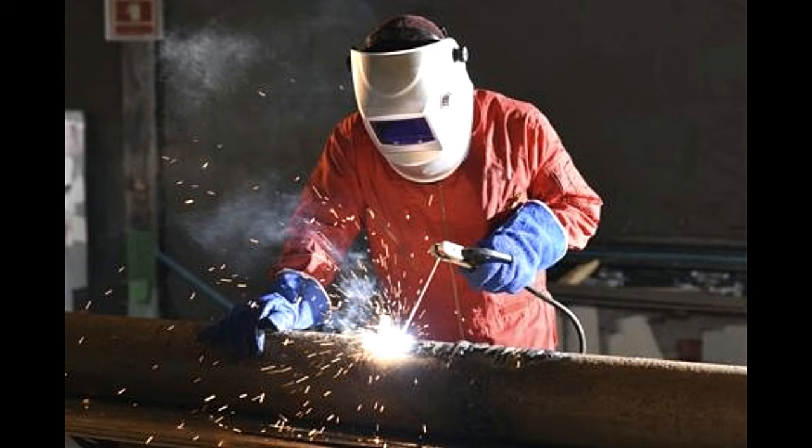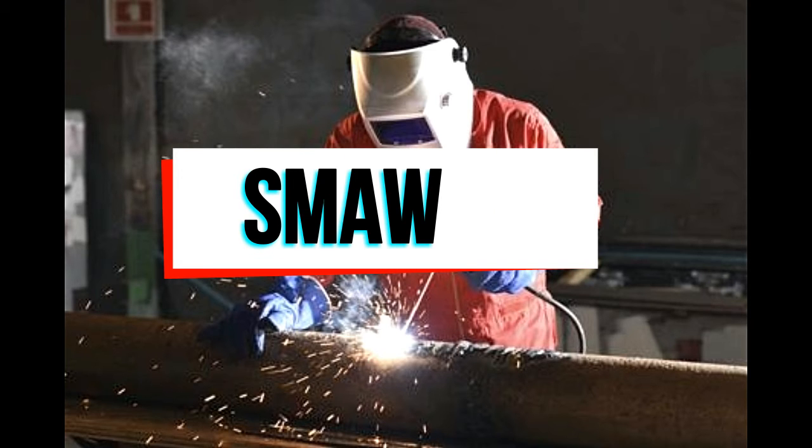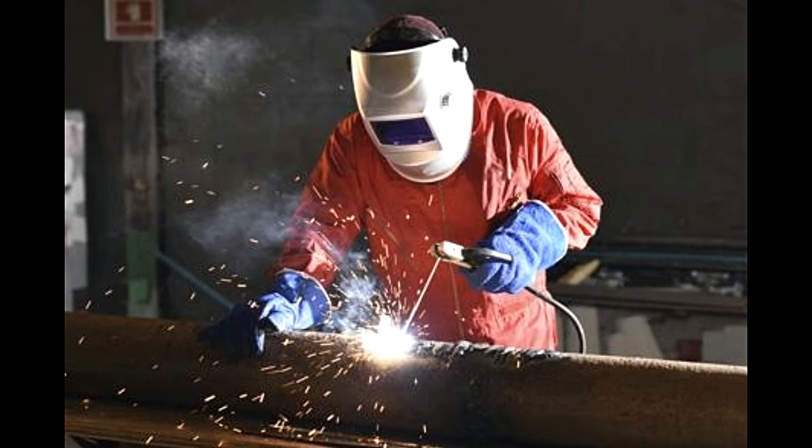Comparison: SMAW vs FCAW vs GMAW. Definition. Shielded metal arc welding is a method that makes use of stick electrodes, in which the electrode surface is coated with a layer of flux. As the electrode melts, the flux gives off a shielding gas and also melts to form slag, both of which cover the surface of the weld pool.